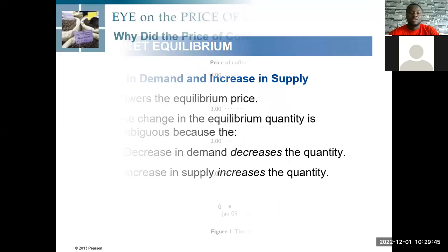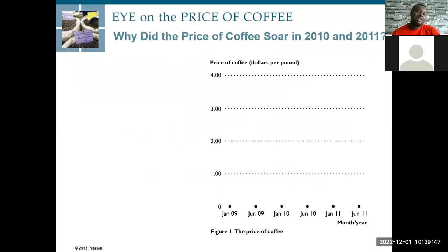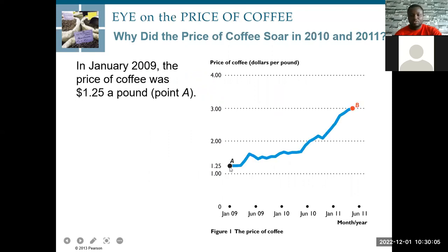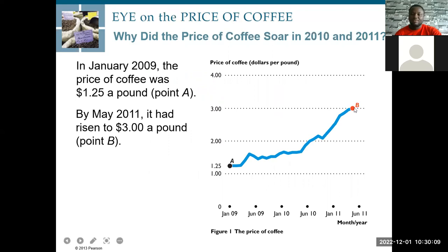Definitely this will lower the equilibrium price, but the quantity is ambiguous, because the decrease in demand decreases quantity while the increase in supply increases quantity, so we wouldn't know until we are aware of the magnitudes. Now a practical question: why did the price of coffee rise in 2010 and 2011? In 2009, it was $1.25 per pound, but by 2011 it reached $3.00 per pound. How do we explain this?